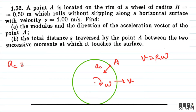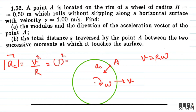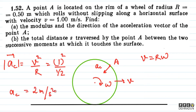The centripetal acceleration is the magnitude of the acceleration of point A. The radius given is 0.5, which we write as 1/2. The centripetal acceleration magnitude comes out to 2 meters per second squared.